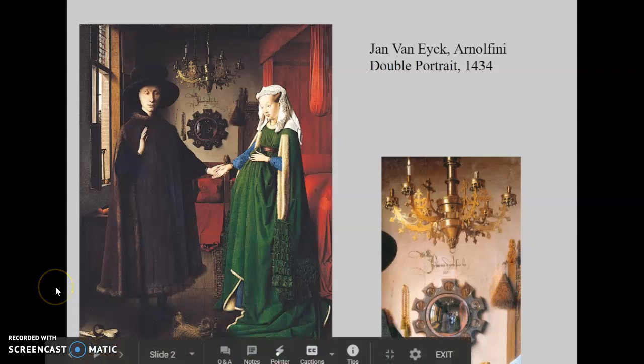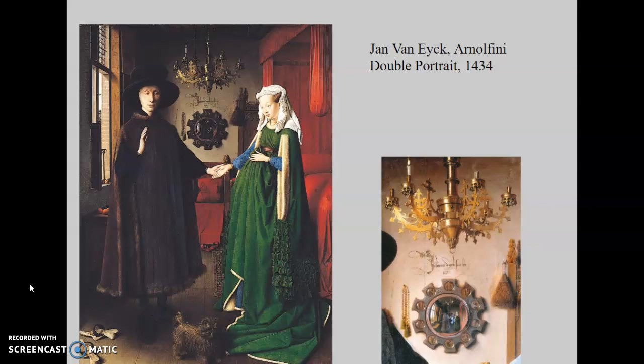We're going to start off today talking about the early Renaissance in northern Europe. Unlike Italy, which has a very high population density and change happens very rapidly, in northern Europe the population is much more spread out. The Gothic started and was well established there, so change is much slower, and the Gothic styles tend to hang on for much longer.